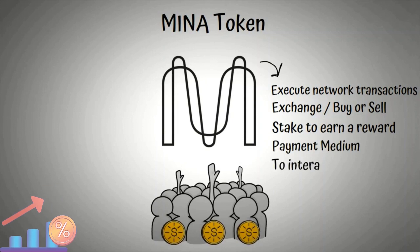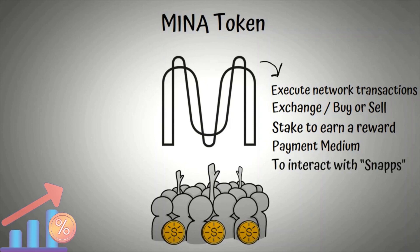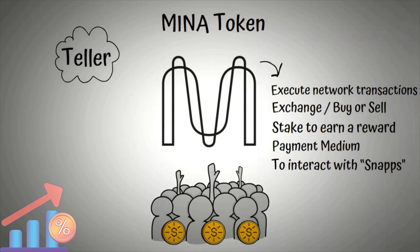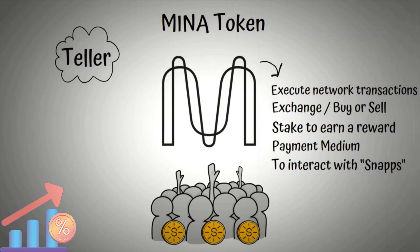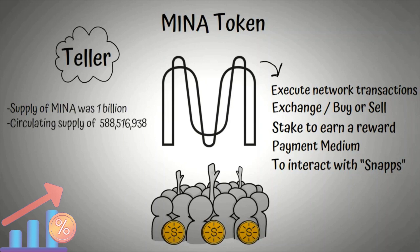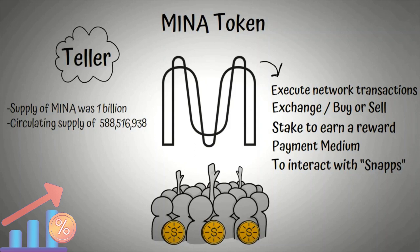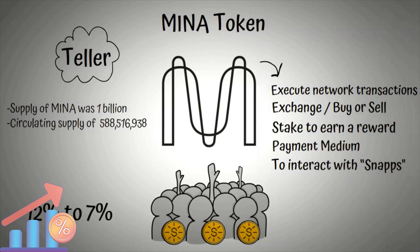MENA token is also used to interact with SNAPs, which are decentralized applications built on the MENA protocol. For instance, Teller, one of the first ever SNAPs, is a credit risk platform that helps users prove their credit scores are above certain thresholds necessary for traditional financial services such as loans, without sharing their private data. The initial supply of MENA was 1 billion tokens, with the current circulating supply of 588,516,938 MENA. The total supply will increase over time, but inflation is set to decrease from 12% to 7% over the first 5 years.